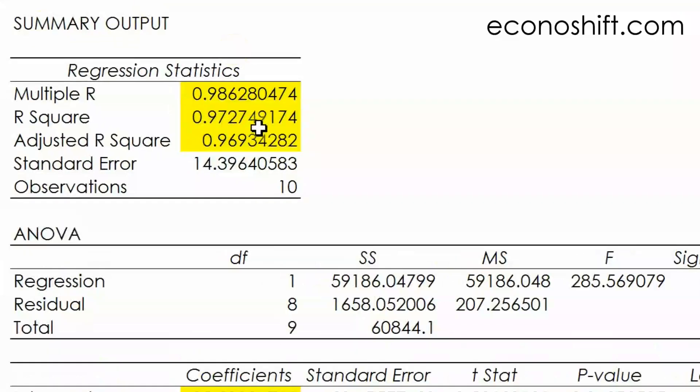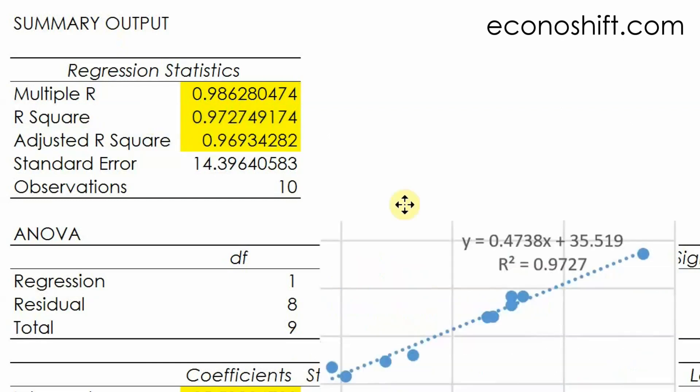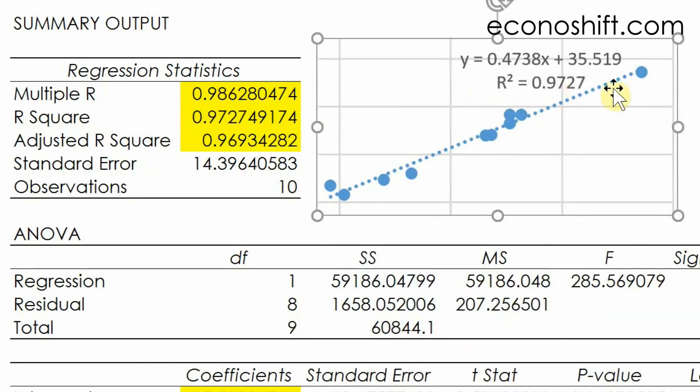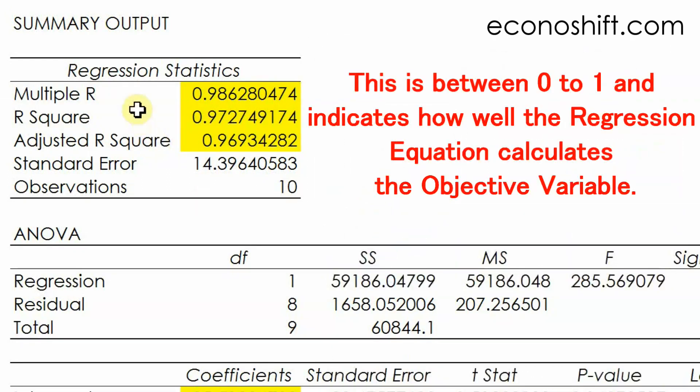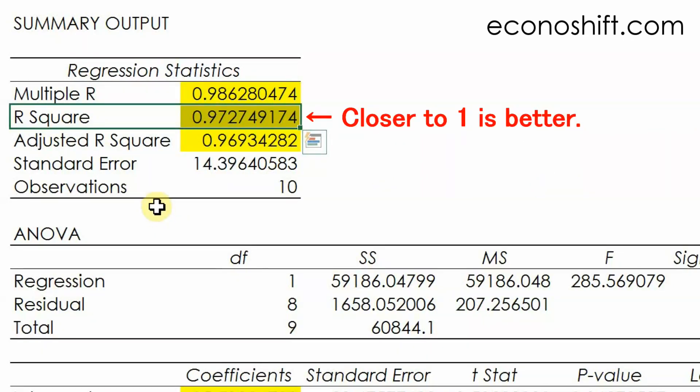Let's look at the top table. See R square. This number is exactly the same as the coefficient of determination in the scatter plot. This is between 0 to 1 and indicates how well the regression equation calculates the objective variable. Closer to 1 is better.